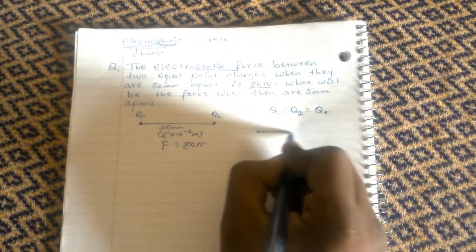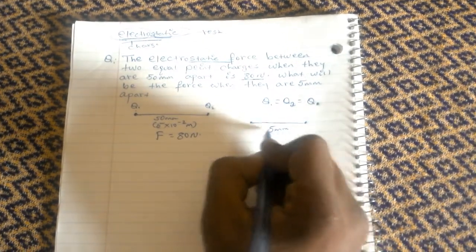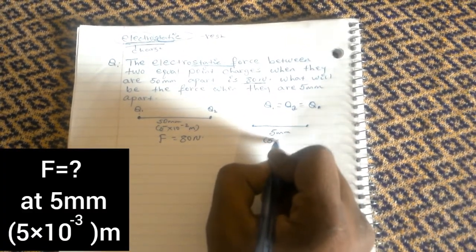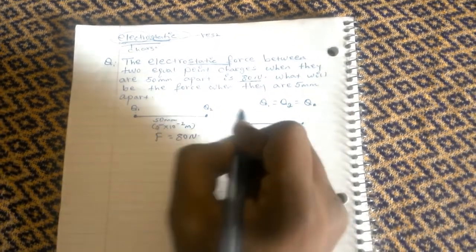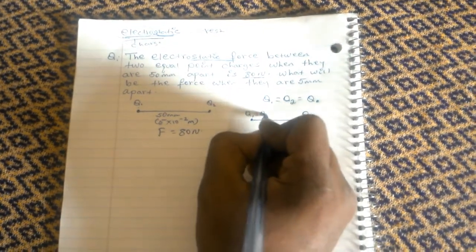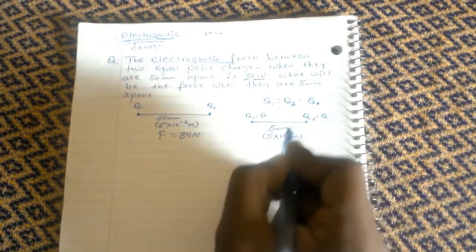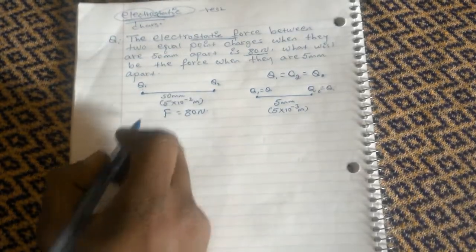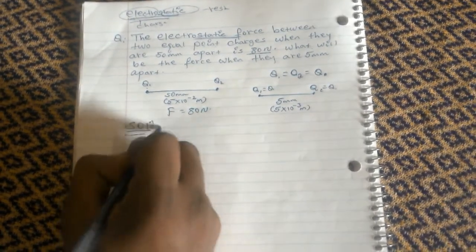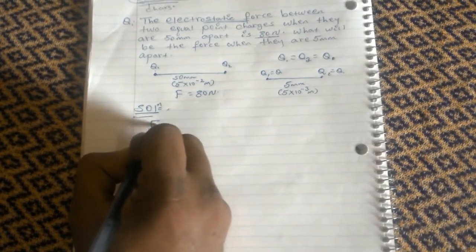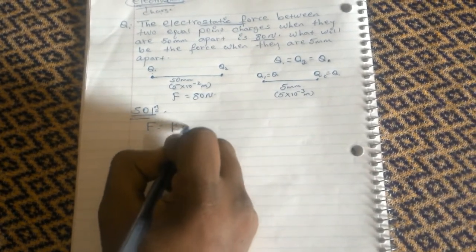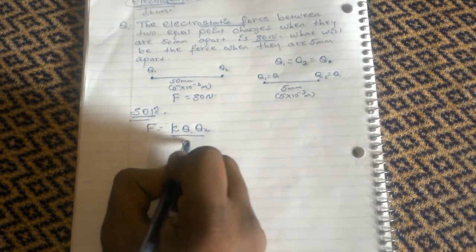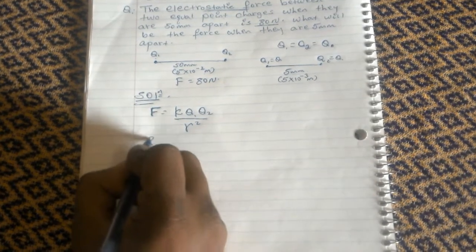What will be the force when they are 5 millimeters apart? Five millimeters converted to meters is 5 times 10 raised to minus 3 meters. So this is Q and this is Q — both charges are Q. We apply the formula: electrostatic force equals k times Q1 times Q2 over r squared. The force between the charges is 80 Newtons.